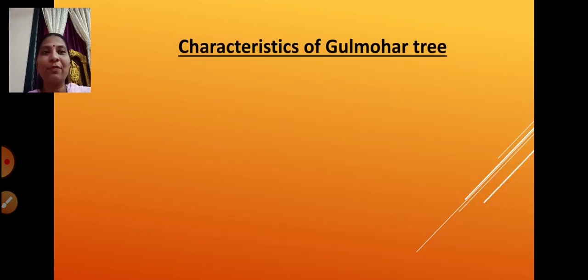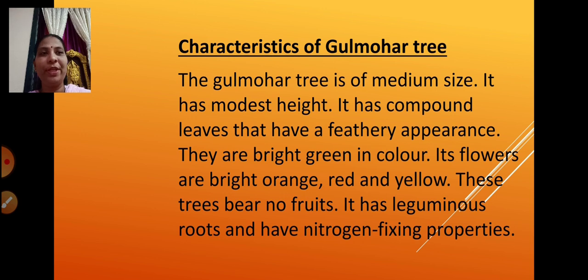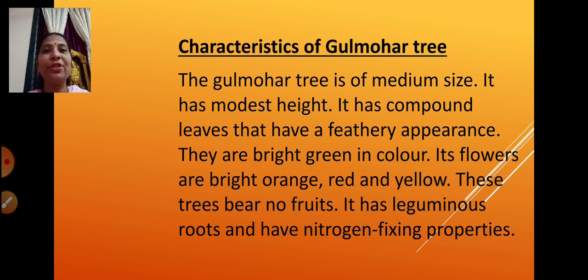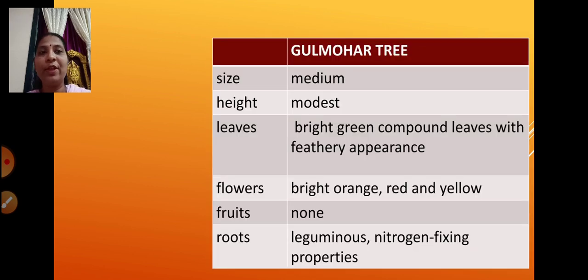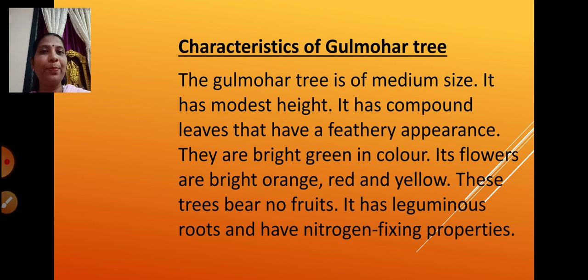We have to transfer this table into a paragraph. The title is 'Characteristics of the Gulmohor Tree.' The paragraph: The Gulmohor tree is of medium size. It has modest height. It has compound leaves that have a feathery appearance and are bright green in color. Its flowers are bright orange, red, and yellow. These trees bear no fruits. It has leguminous roots with nitrogen-fixing properties. All six points from the table have been included in the paragraph and no points have been missed.